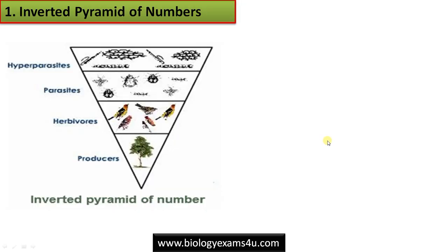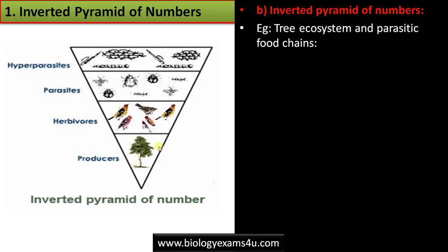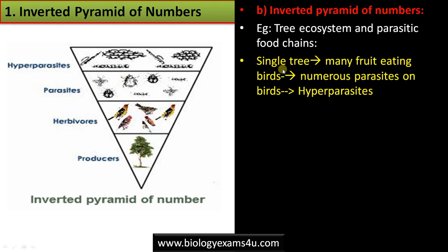Moving into the topic: inverted pyramid of number. This occurs in the case of tree ecosystems and parasitic food chains. There is a single tree, many fruit-eating birds, numerous parasites on these birds, and numerous hyper-parasites on these parasites — like fungi and bacteria — whose numbers are very high as they are microorganisms.